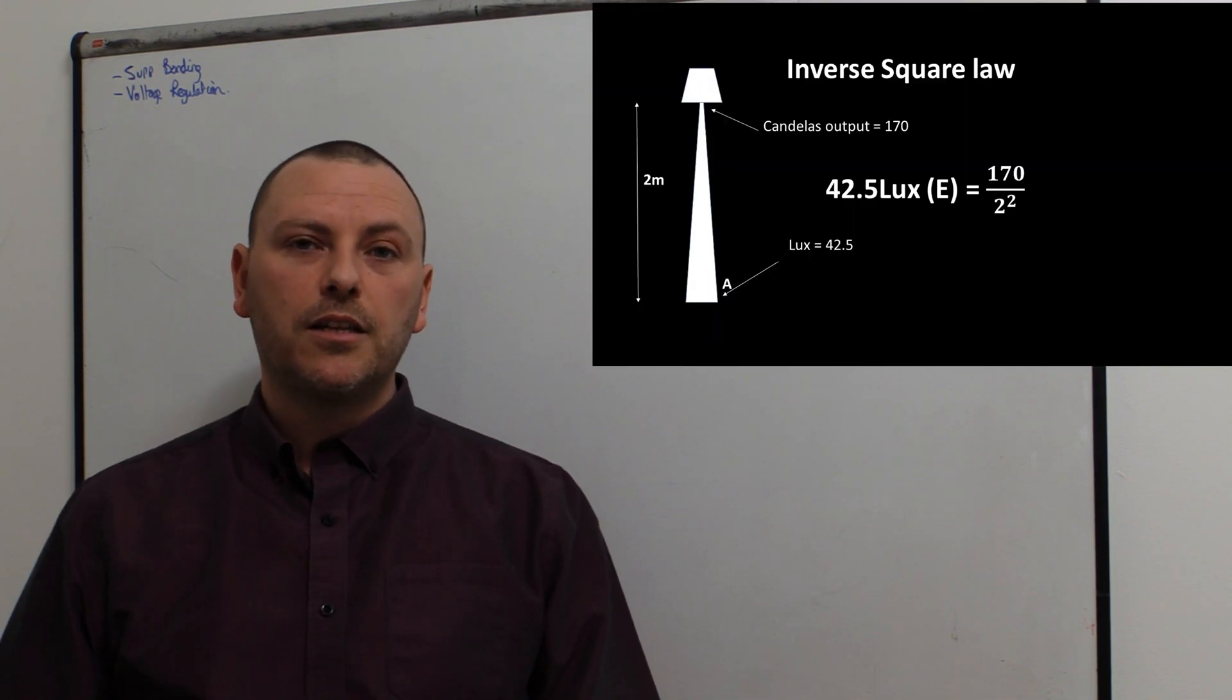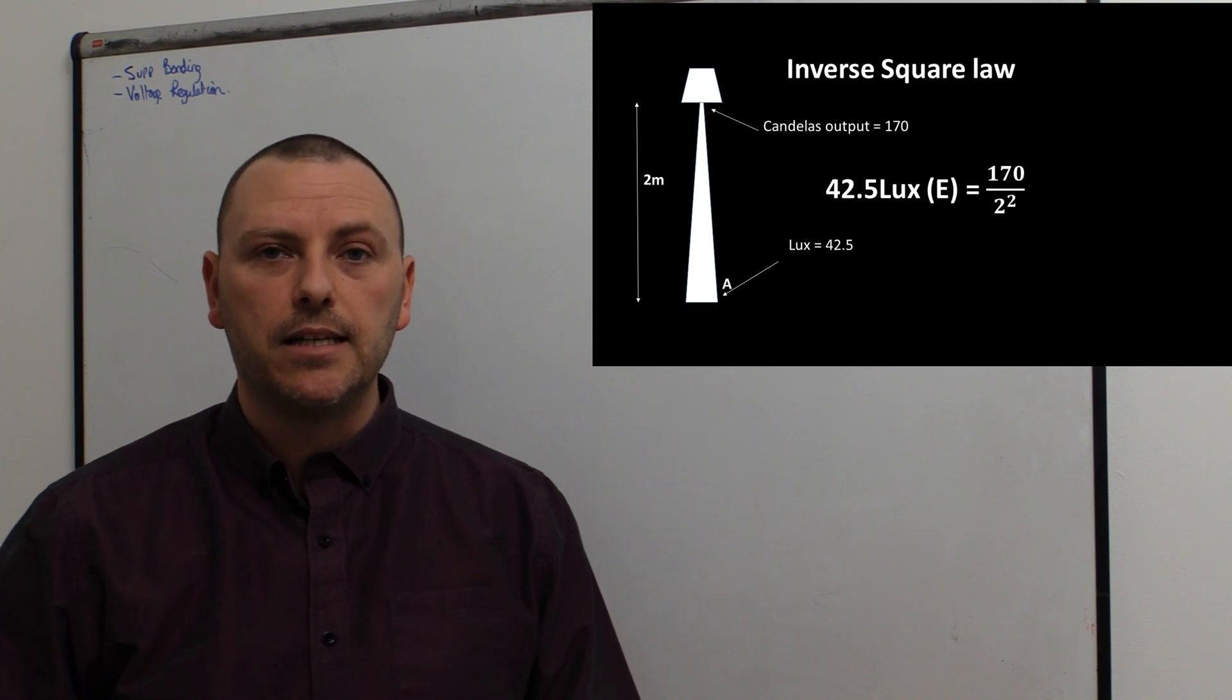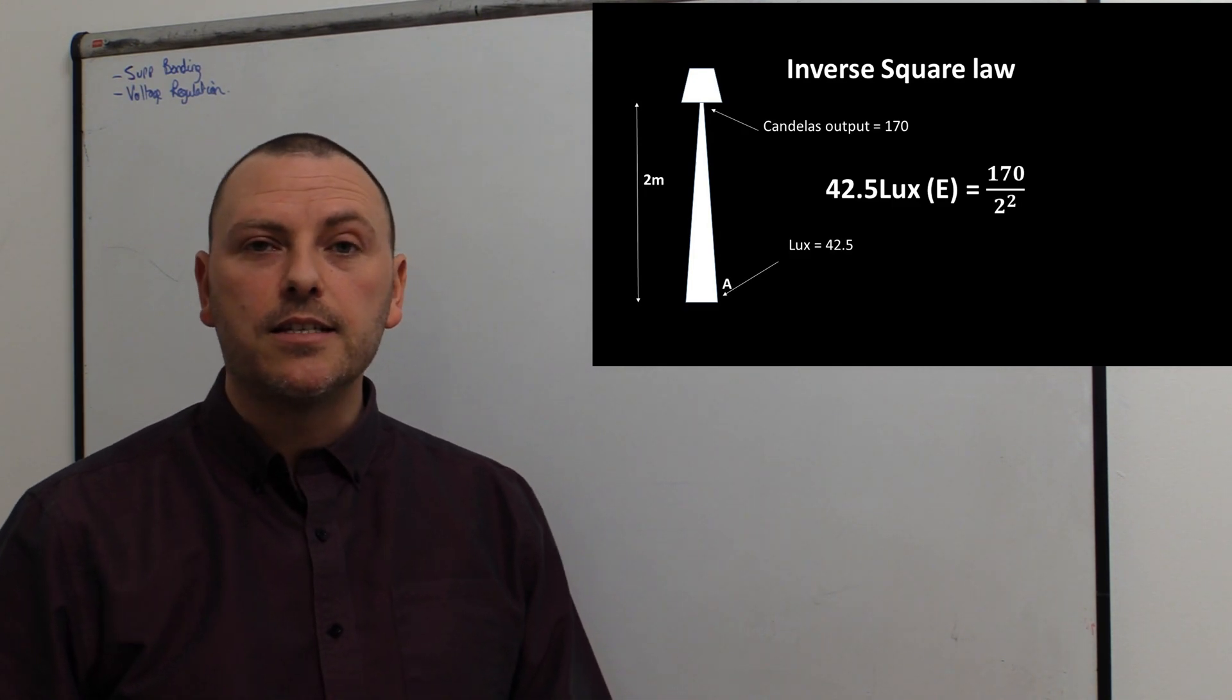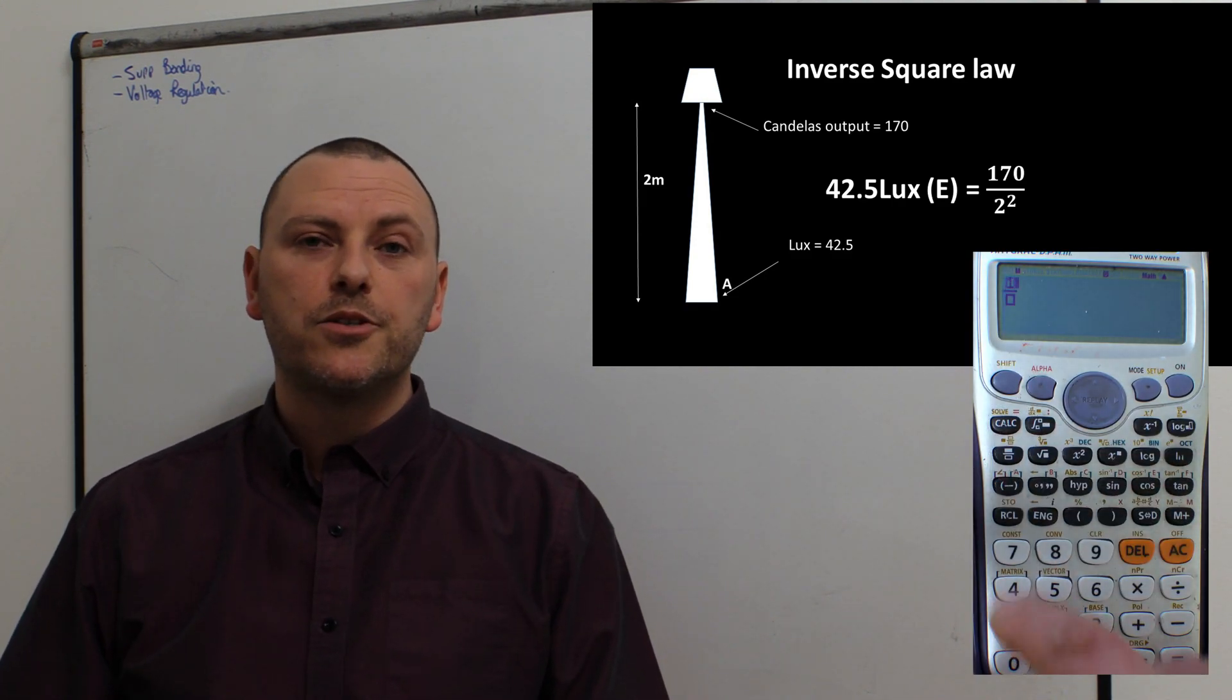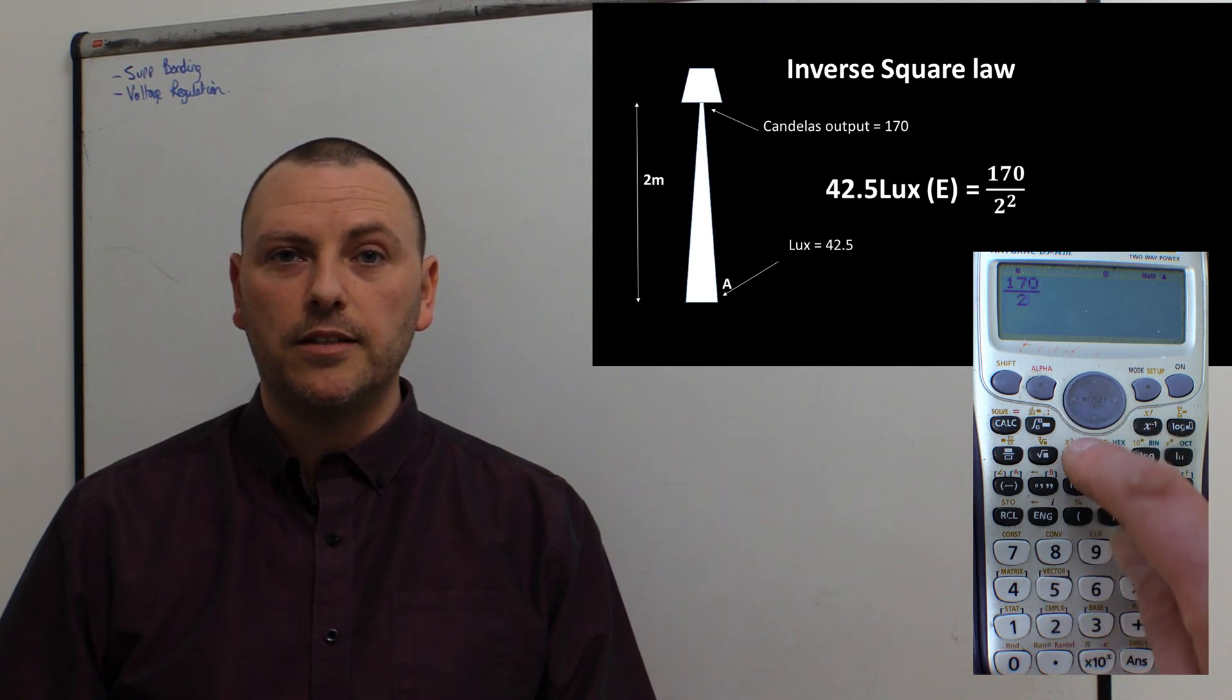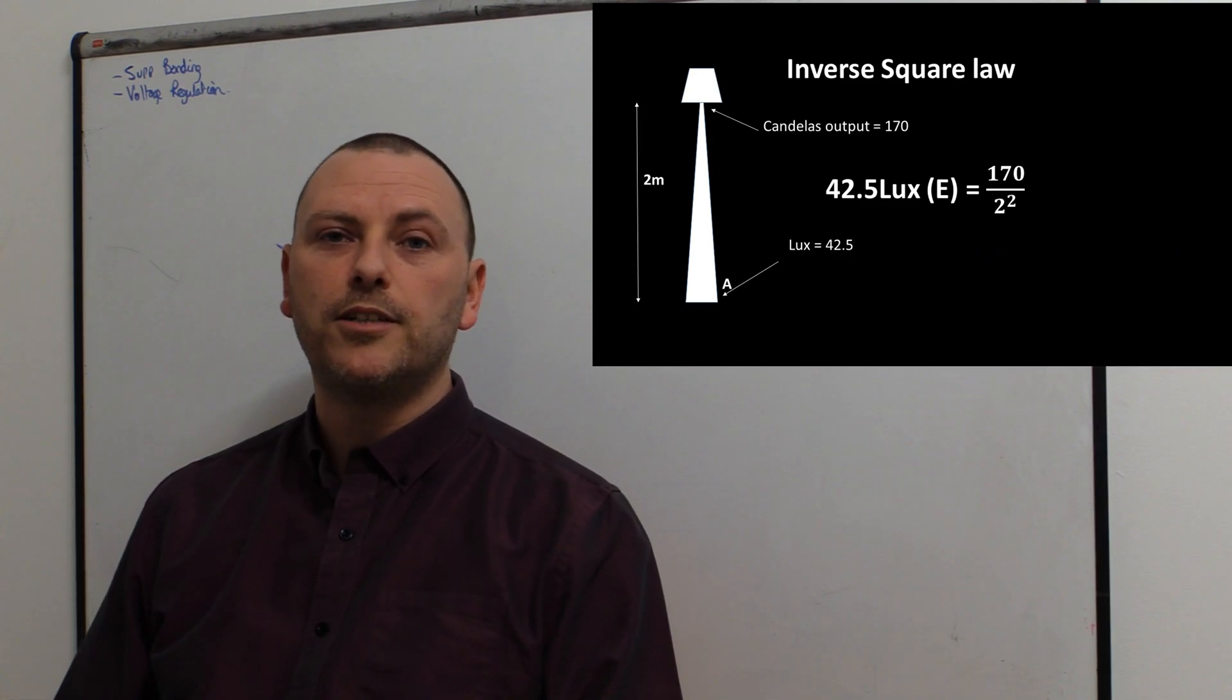So let's say we have a light source and it's pumping out 170 candelas of beautiful light and our distance is two meters away. Well we simply do 170 divided by two meters squared and that gives us a lux level of 42.5 lux.